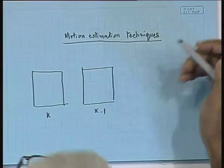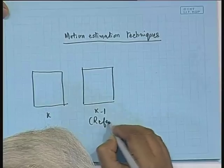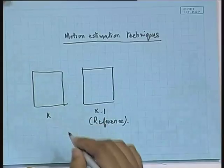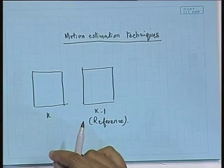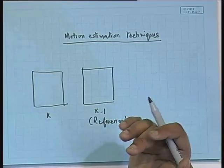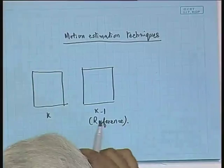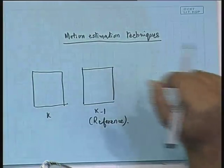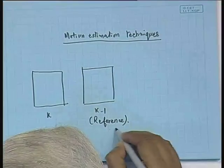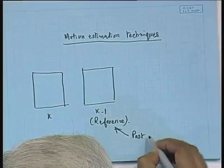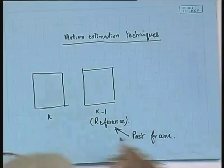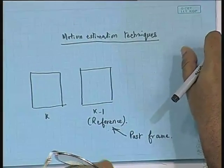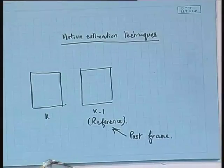The k minus 1 frame, used as the reference, is going to predict what frame number k is going to be. After finding out the motion vectors, it applies those motion vectors onto the reference frame and predicts k. The difference between the incoming frame k and the predicted frame k has to be encoded. So a past frame is used as a reference, and on the basis of that past frame we are predicting what the future is.